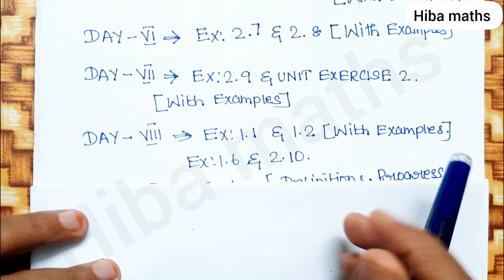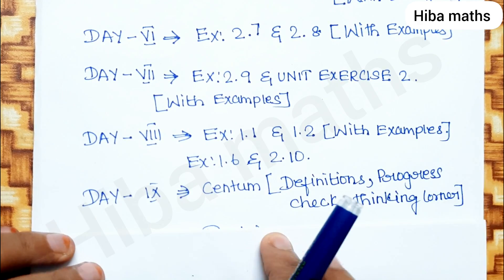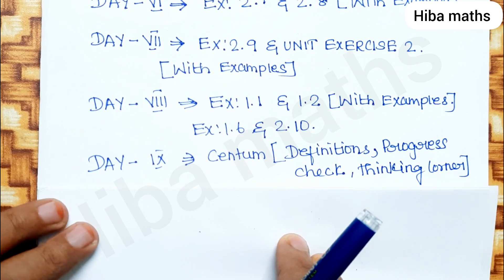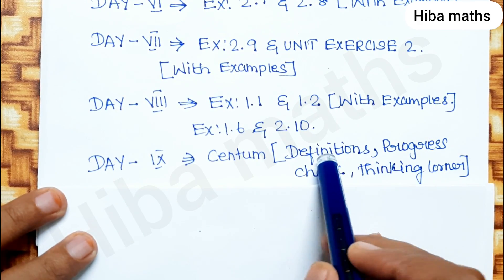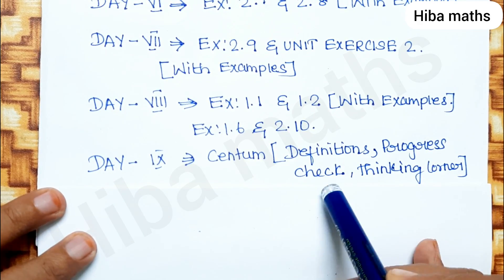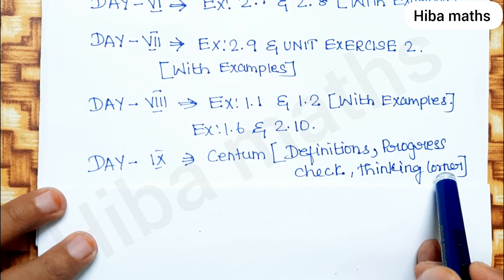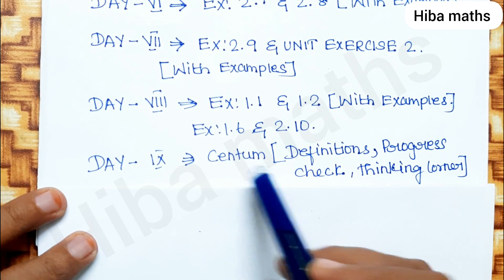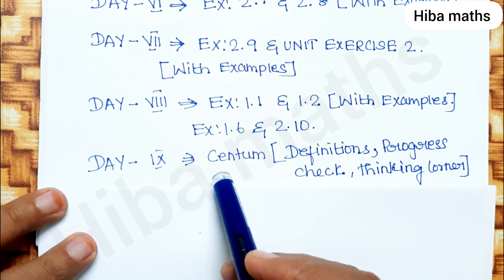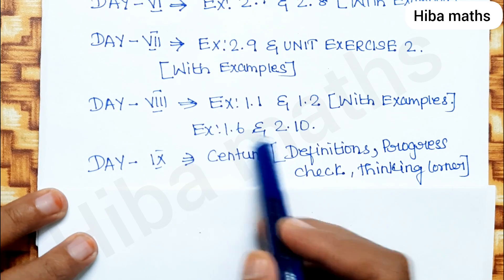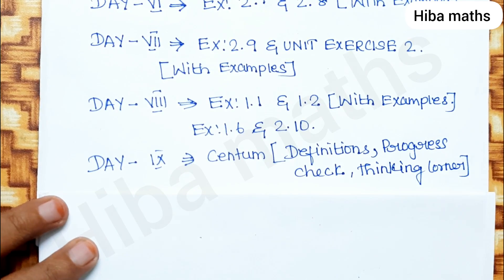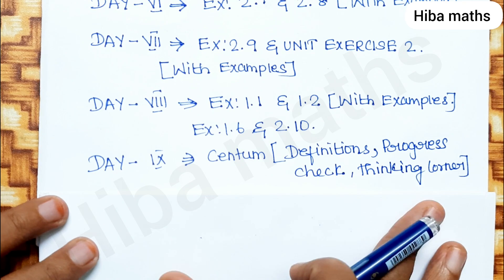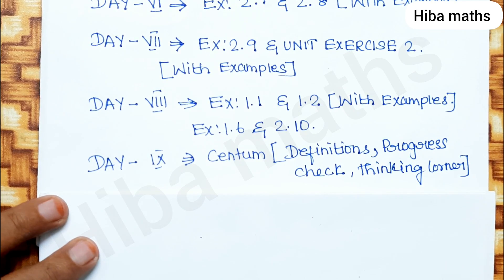Day 9: cover definitions, progress checks, and thinking corners. Solve your thinking corner problems. Day 9 is for balance and revision — review what you want to strengthen and solve thinking problems.